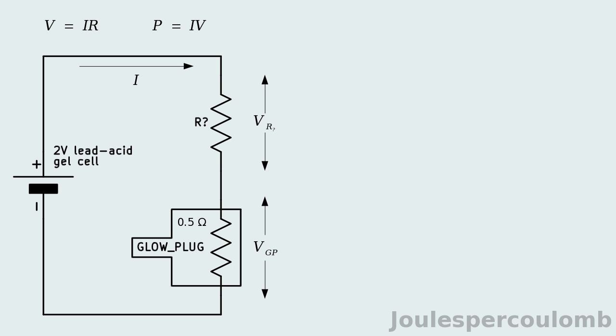Let's aim for a power output of one and a half watts. This must be equal to the voltage across the glow plug multiplied by the current through it.